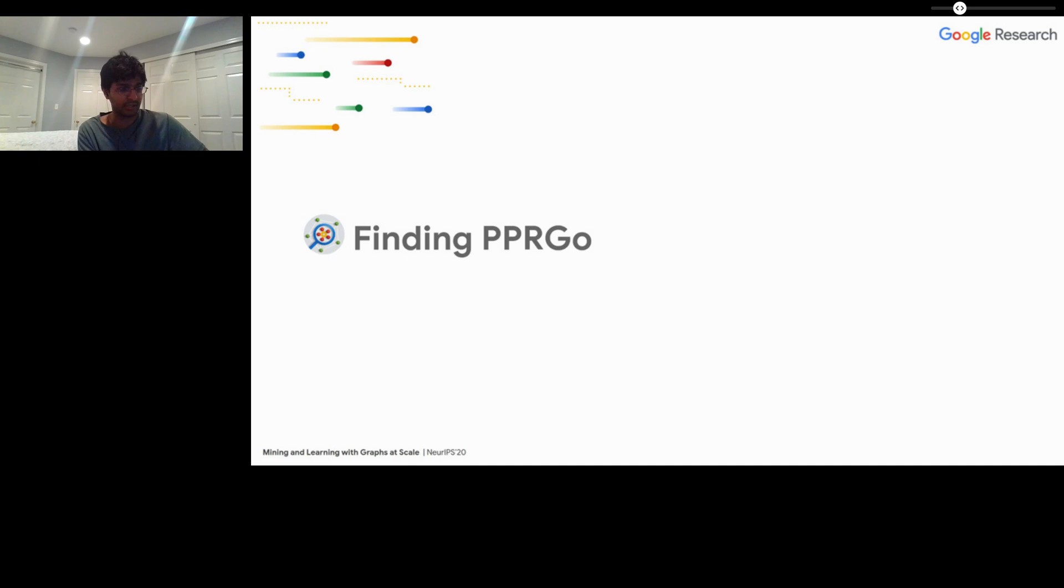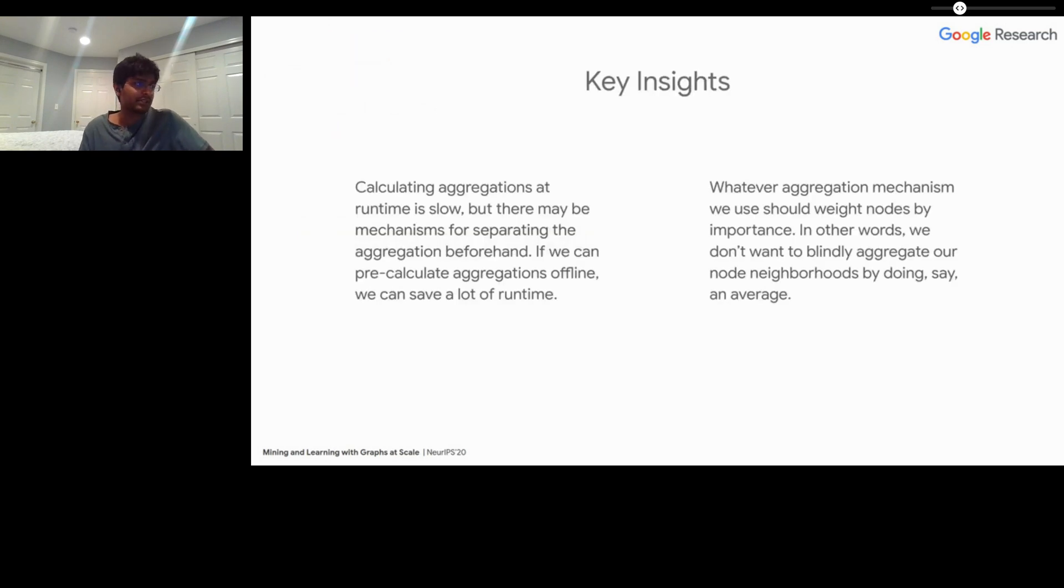In this section, we're going to talk about some of the insights that drive PPR Go and the underlying technologies, and how PPR Go works end to end as a single model. There's two key insights here. The first is that calculating aggregations at runtime is really slow. You have to be in TensorFlow, you have to have something that's end-to-end distributable, and it just doesn't really work. But there might be mechanisms for separating that aggregation beforehand. If we can pre-calculate aggregations offline, we might be able to save a lot of the runtime and use other approaches that are a lot more efficient than what we're currently doing, which is just sampling the graph. The second key insight is whatever aggregation mechanism we use should weight the nodes by their importance. In other words, we don't want to blindly aggregate our node neighborhoods. There should be some sort of a dial that allows us to say, I only want to grab the top n most important nodes for some definition of importance.